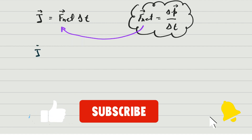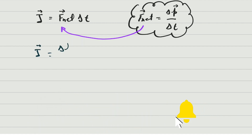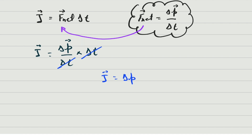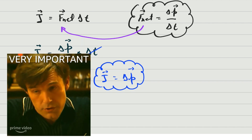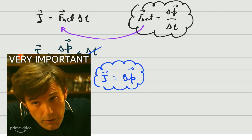So we have that impulse is equal to the change in momentum divided by time, multiplied by time. The time terms cancel each other — time divided by time equals one. So what we have at the end is that impulse is equal to the change in momentum. This is called the impulse-momentum theorem, and it is a very important theorem we are going to use a lot.